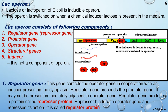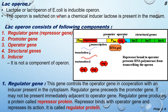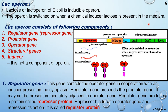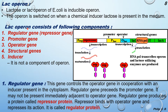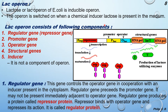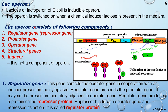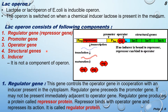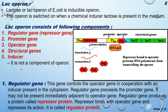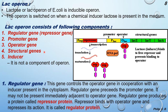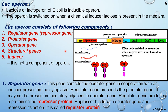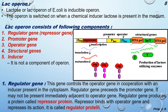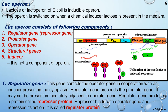The lac operon of E. coli is an inducible operon. The operon is switched on when the chemical inducer lactose is present in the medium. The lac operon consists of five components: the regulator gene (repressor gene), the promoter gene, the operator gene, the structural gene, and the inducer. Note that the inducer is not a component of the operon itself; all the other four are components.